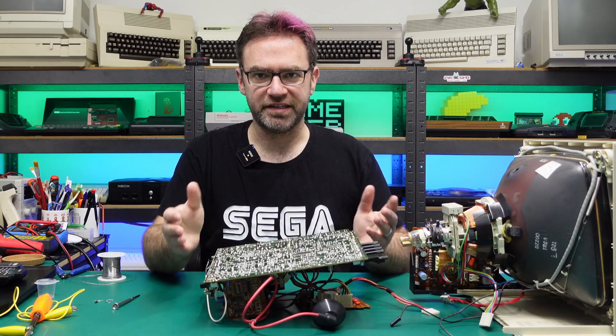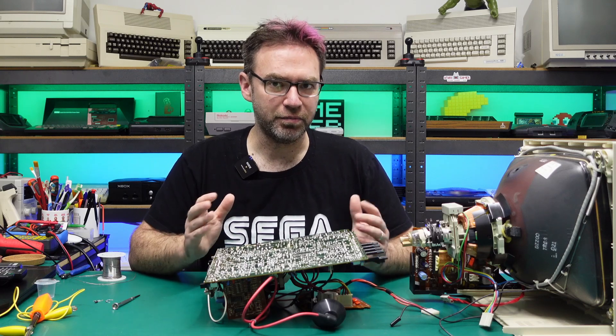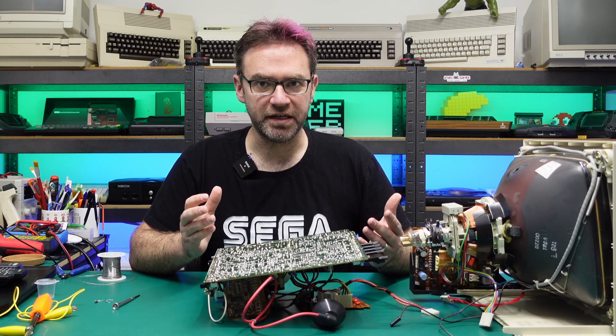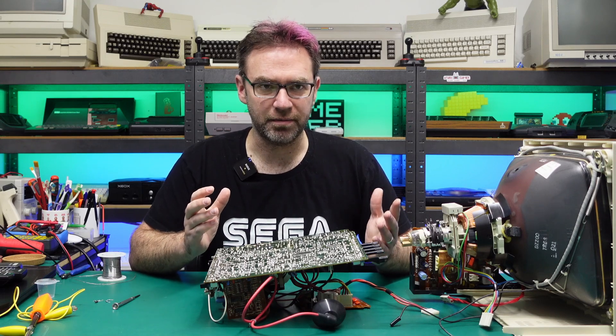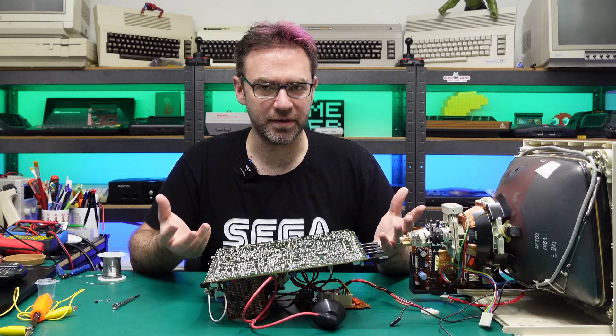So in a normal SCART setup the fast blanking signal basically blanks the composite video signal and injects RGB and this can be done on pretty much a like a per pixel although they're not really pixels but you get what I'm saying.